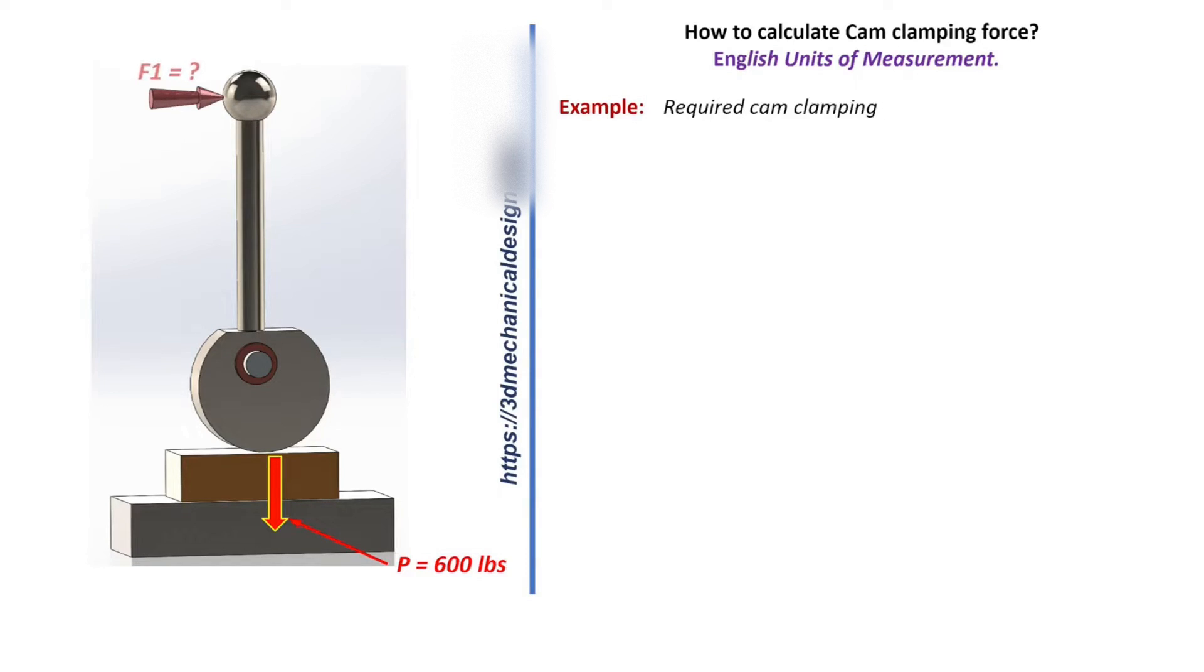Example: Required cam clamping force 600 pounds, P = 600 lbs. Determine the required force on the handle F1. Working conditions: Static Load.